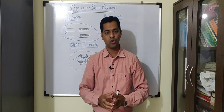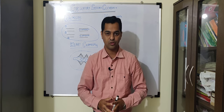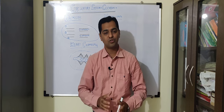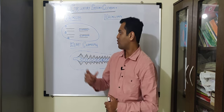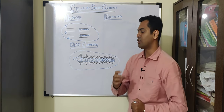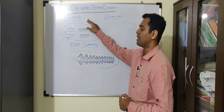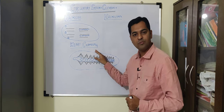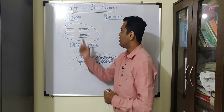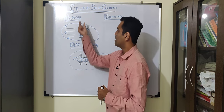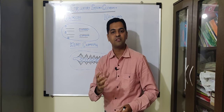Cockroach belongs to phylum Arthropoda and has open circulation, so it does not have blood vessels. When discussing the circulatory system of cockroach, there are three components: the hemocoel, the heart chambers, and the hemolymph.